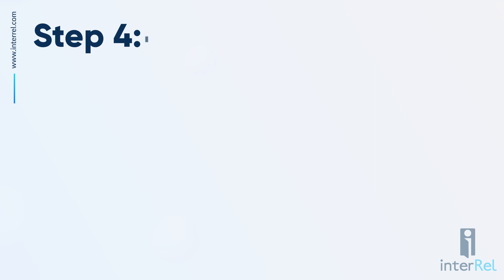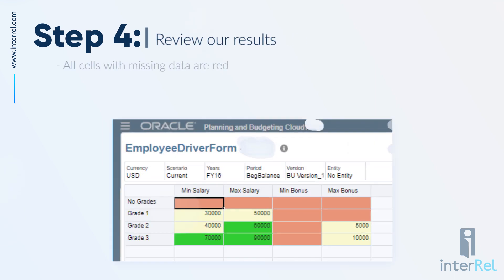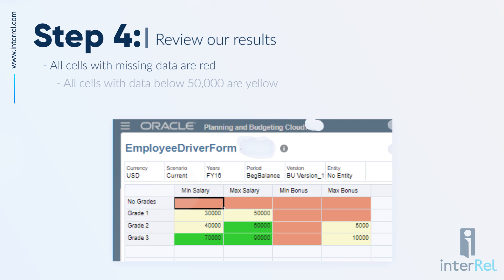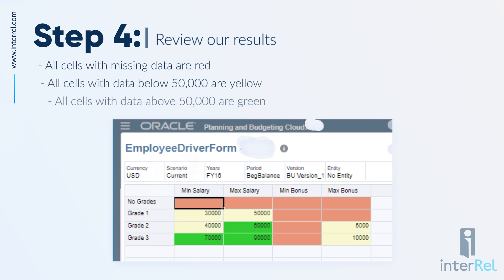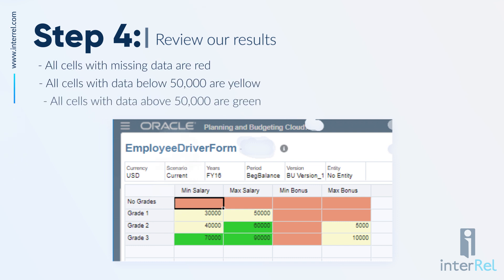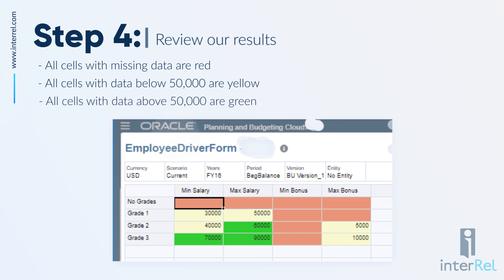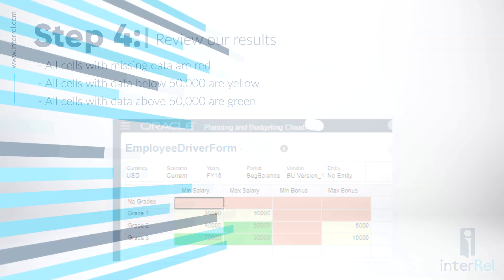When we open up our web form we can review our results. Any cell with missing data is shaded red, all cells that have data below 50,000 have a yellow shade, and all cells with data above 50,000 have a green shade.